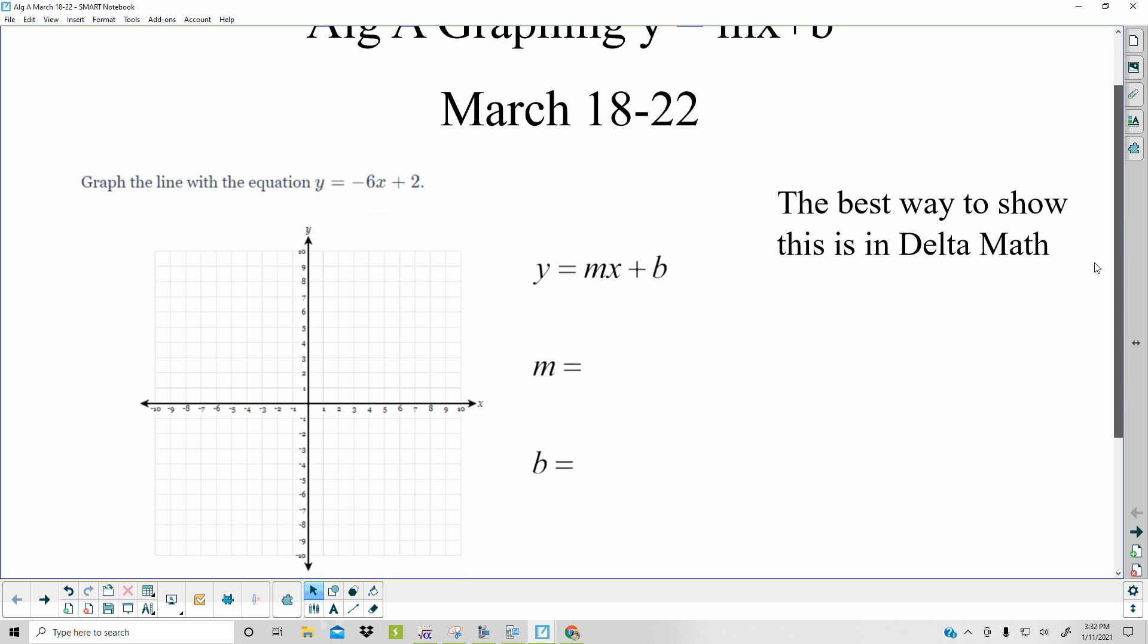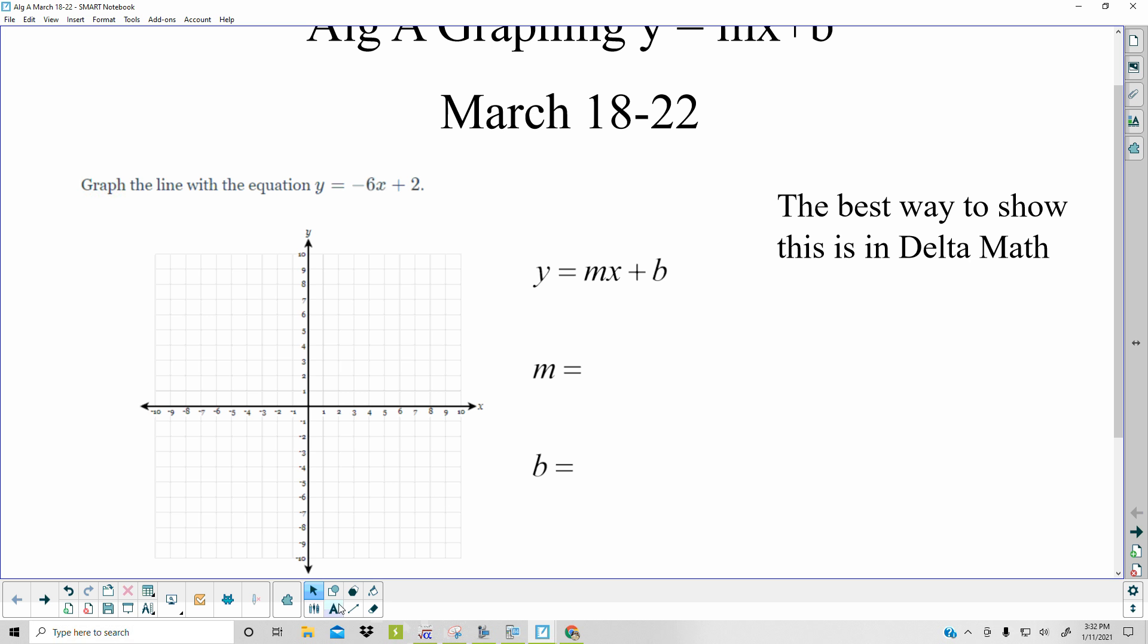What you guys are going to be doing is graphing lines in the format, the style of the equation that you'll be getting, is called slope-intercept form. It's called slope-intercept form because they tell you the slope. Remember, m is your slope, and b is your y-intercept.